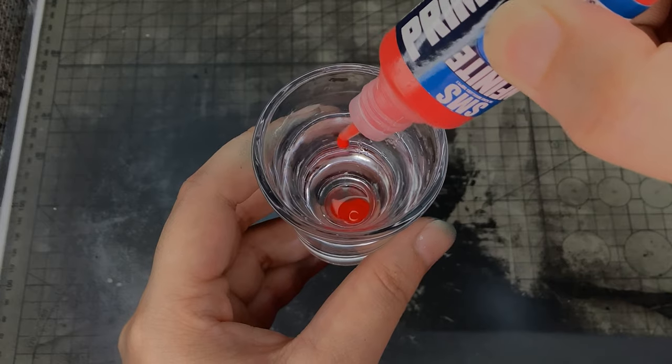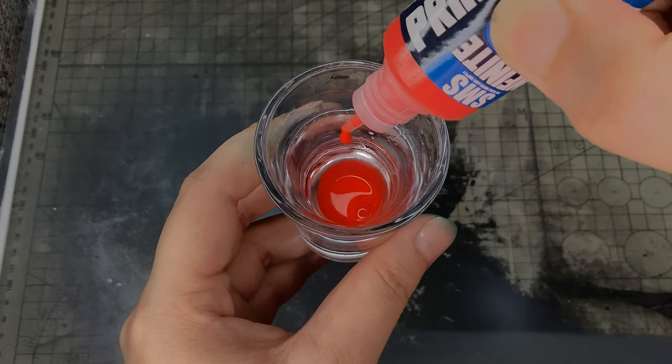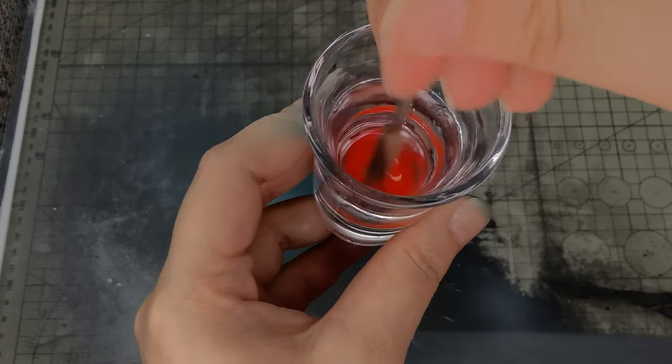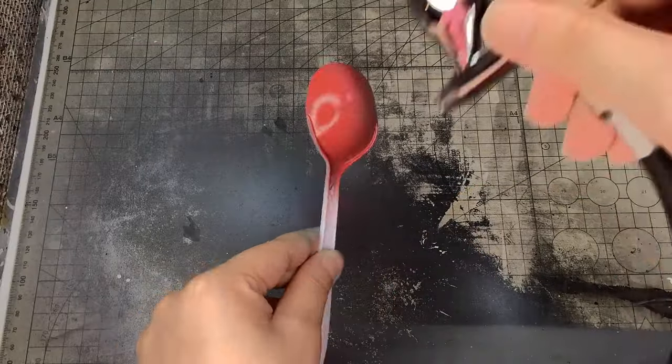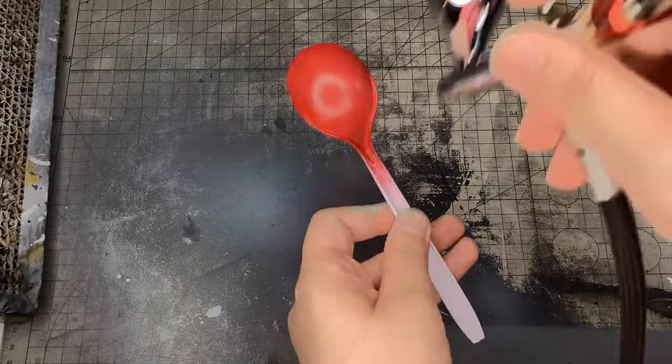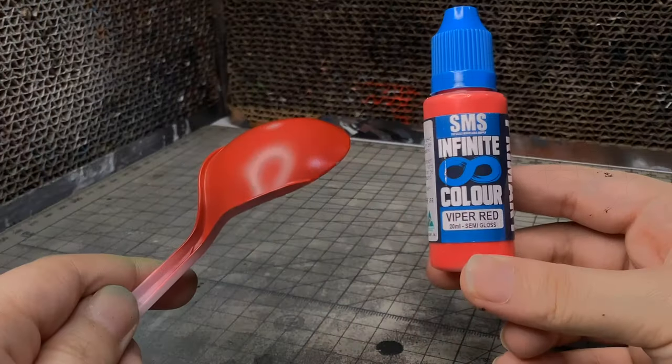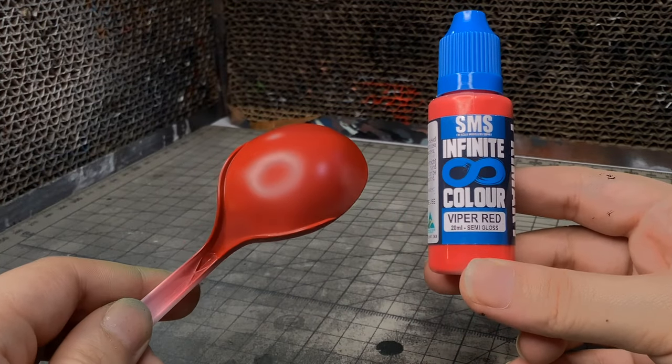This one has a ratio of 3 to 1. I use thinning sauce for this and it airbrushes really good. Usually, it's hard to get coverage with reds and yellow under a dark primer. But this one looks red to me. Not the brightest, of course, but it works.